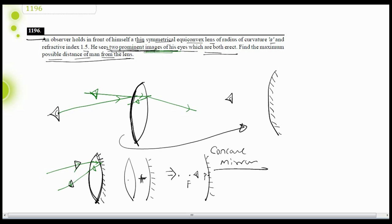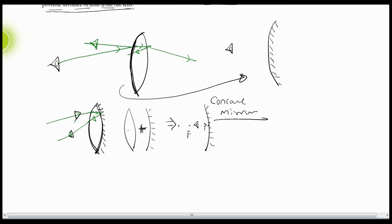So the eye of the person should be between the pole and the focus of this effective concave mirror. If the person is beyond this focus point, the image will be inverted, which contradicts the given condition that the image is erect. So the condition is that the eyes of the person should be before the focus of the effective concave mirror. To find this distance, we need to find the focal length.